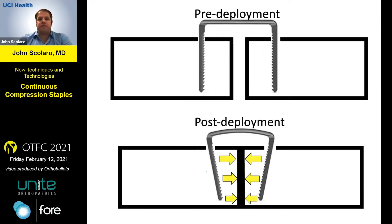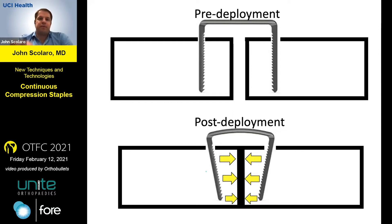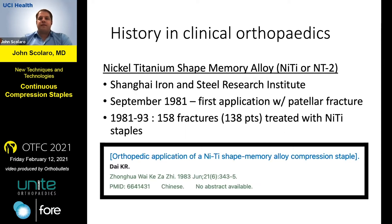If you've never seen these, here's the general gist of how they're used. You have two pre-drilled pilot holes placed bicortically across a small bone. There's a handle that spreads the two tines or ends of the staple apart. The staple is placed into the bone, and once the mechanism that opens the tines is removed, it deploys and generates continuous compression across the end of the staple.